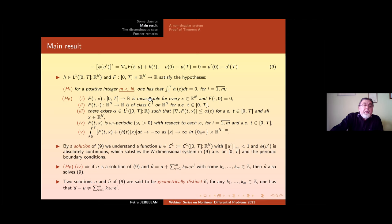Yeah. In this view, two solutions u and u hat of 9 are said to be geometrically distinct if for any k_1 to k_m in Z, one has that their difference differs from sum for a combination of ω_i e_i with the integral weights actually.